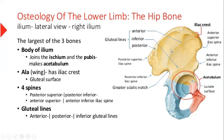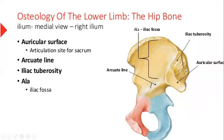In addition, the body of ilium is joined with the ischium and the pubic bone to form the acetabulum. This is the lateral view of the whole hip bone, and this is the medial view. In the medial view, we have an articular surface which articulates the joint with the sacrum.